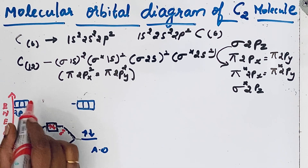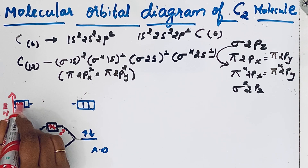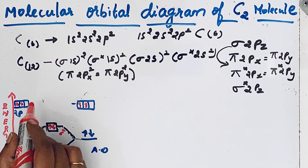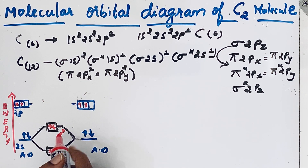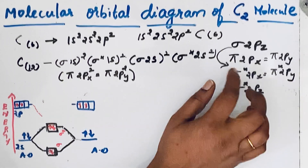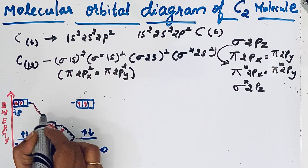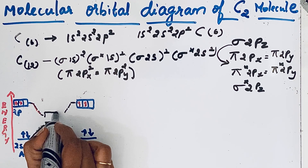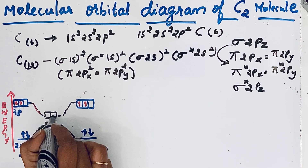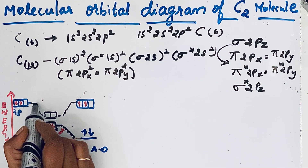Now we come to the 2p orbitals. Each carbon atom has two electrons in the 2p orbital. When these atomic orbitals combine, we get molecular orbitals. Due to sp mixing, pi 2px and pi 2py come first — these are the low energy orbitals. We draw pi 2px and pi 2py, and then sigma 2pz comes after.